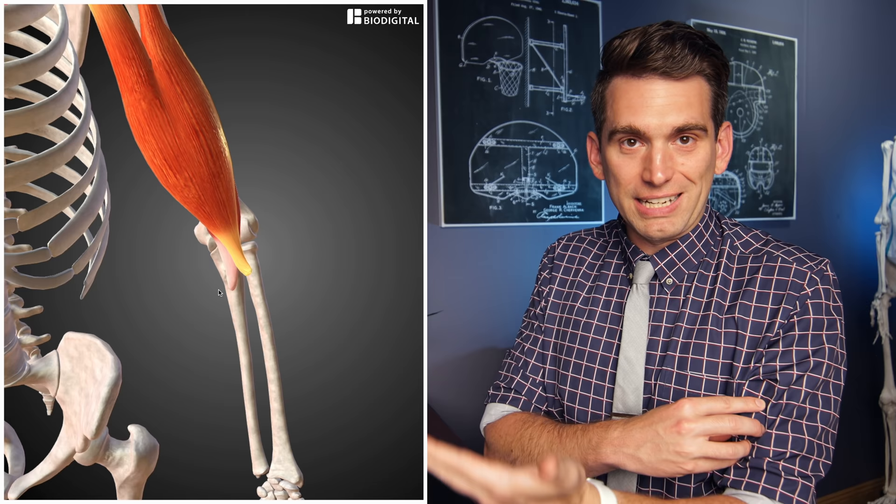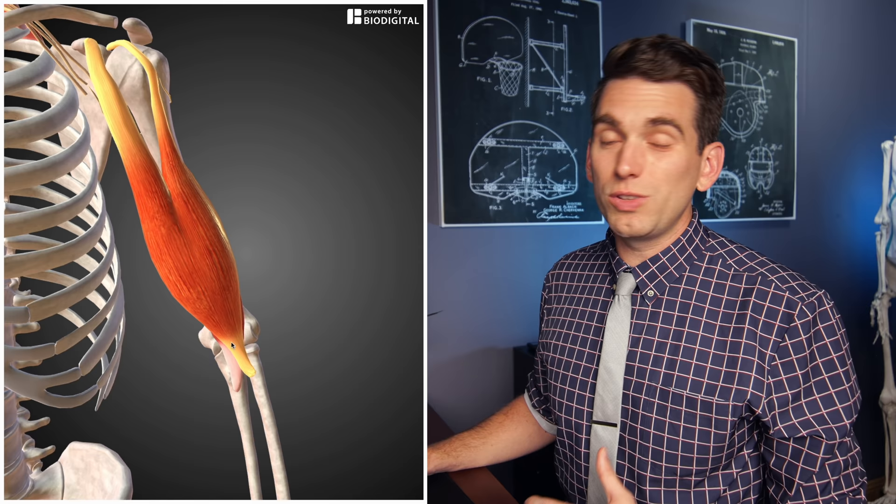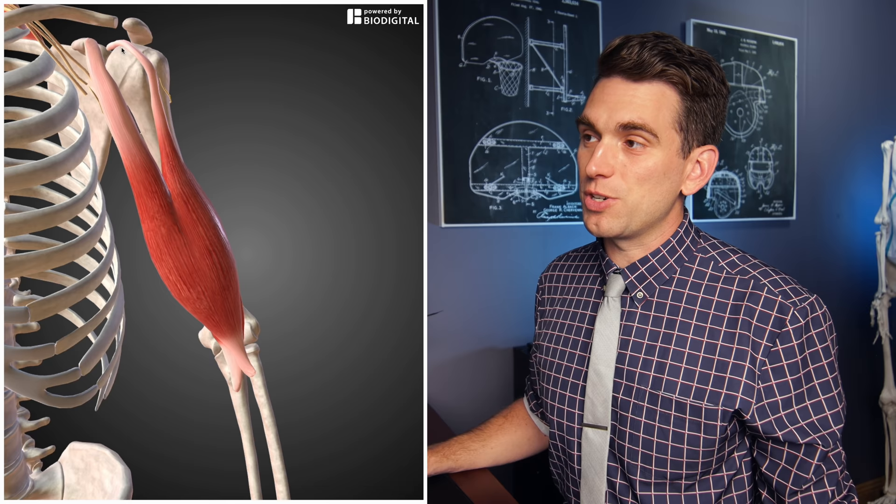Eddie's injury was unusual also because of the location. Distal biceps tendon ruptures — meaning where the tendon inserts down at the elbow — are only about 10% of all the biceps tendon ruptures we see. It's much more common to have a rupture of the long head of the biceps tendon up near the shoulder. So going back to the injury, as Eddie's arm comes around, that biceps gets eccentrically loaded, causing that distal biceps tendon to rupture.